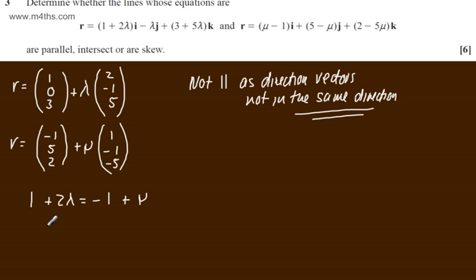The j components: minus λ will be equal to 5 minus μ. And then on the k components: 3 plus 5λ, and on the k components of the second one we'll have 2 minus 5μ.